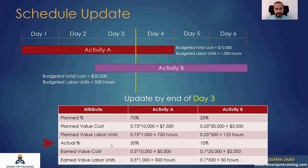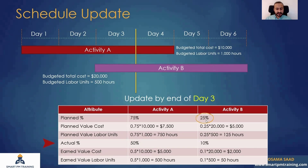The actual progress: Activity A is 50% complete and Activity B is 10% only. So Activity A should have been 75% by end of day three, but actually completed 50%. Activity B is also in delay — planned 25%, actual 10%. You calculate the earned value cost and earned value labor units by multiplying the activity percentage complete by the total cost or labor units for each activity.